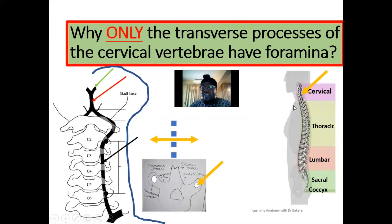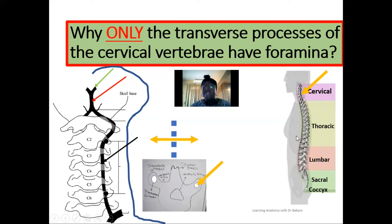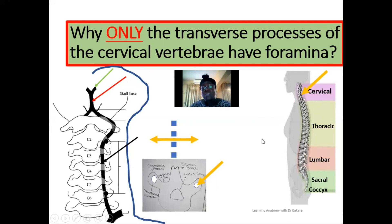The cervical vertebra is justified for presenting this foramen on its transverse processes. The other vertebral bones do not have this foramen on their transverse processes because there is no need to create a foramen that no structure will be passing through. Everything in anatomy is justifiable and occurs for a reason.